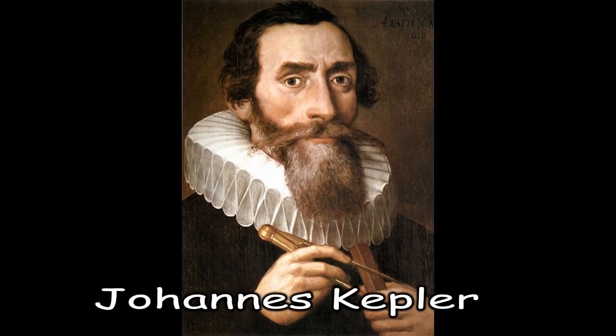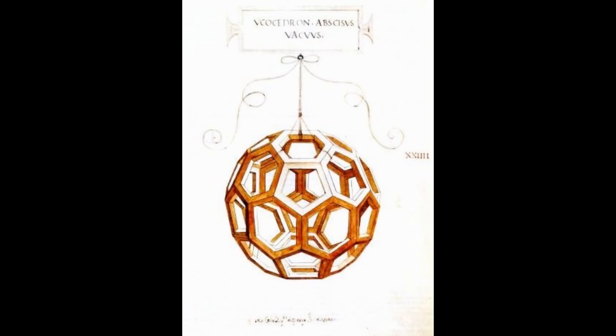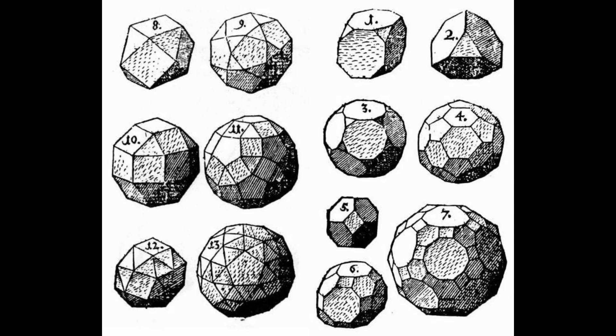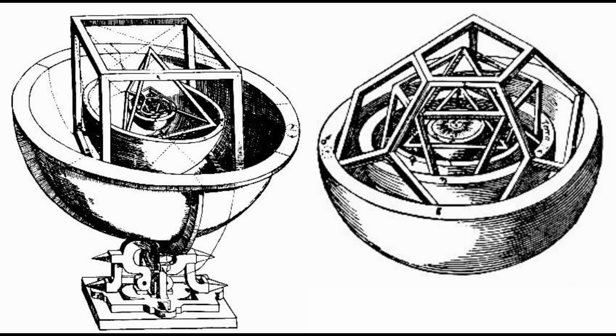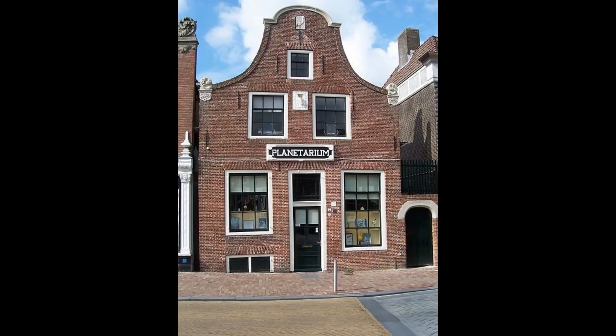Other men, such as Leonardo da Vinci and Johannes Kepler, were also interested in these spherical geometric shapes. Da Vinci illustrated them, and Kepler studied them alongside the heavens — perhaps because they saw the heavens as one gigantic sphere and struggled with how it was constructed. Kepler and others studied these geometric shapes to understand the movements of the heavens.